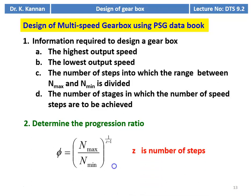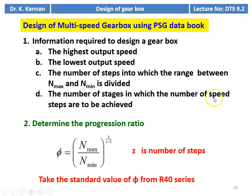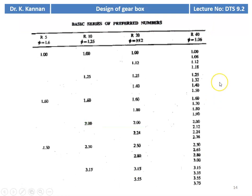The first step is to calculate the progression ratio. The progression ratio is defined as: φ = (N_max / N_min)^(1/(z−1)), where z is the number of steps. For example, z may be 9 for a 9-speed gearbox, 6 for a 6-speed gearbox, 12 for a 12-speed gearbox, or 18 for an 18-speed gearbox. Once we calculate the φ value, we take the standard value from the R40 series. In this design, we have to select the progression ratio from the R40 series.